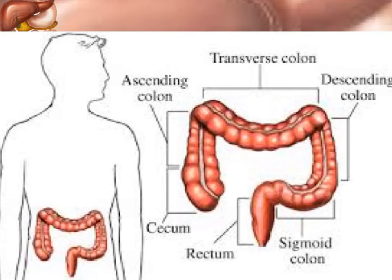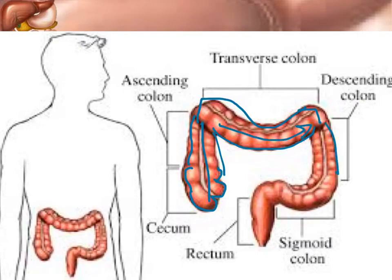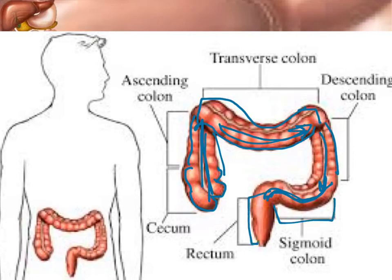Starting with the first portion, here is the cecum, attached to both the small and large intestine. Then ascending as food travels up, then across the abdominal wall is the transverse colon. Going down the left side is the descending colon, then the sigmoid colon makes its S-curve, and then the rectum comes straight down. The last opening from the rectum to the outside is the anus.